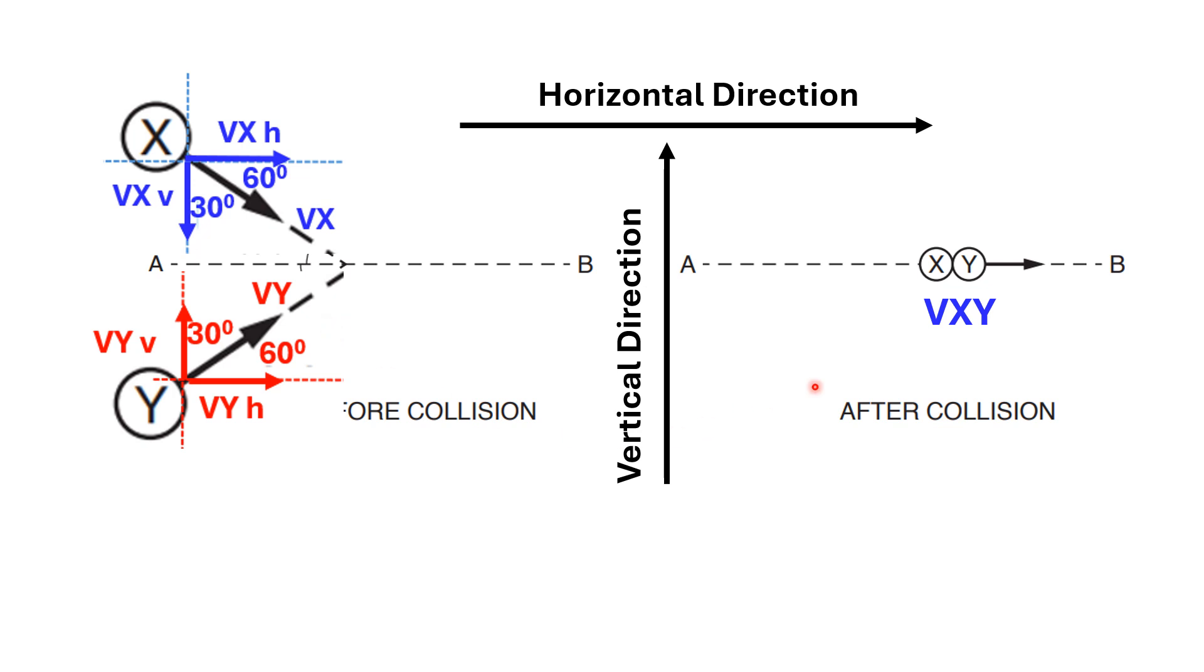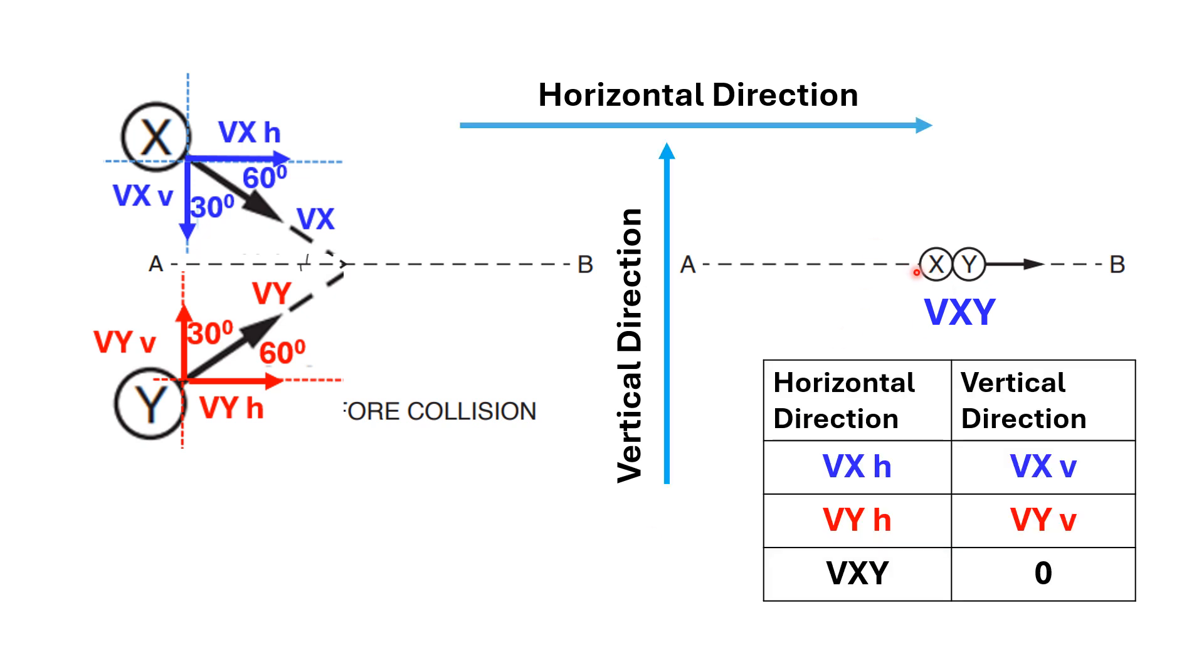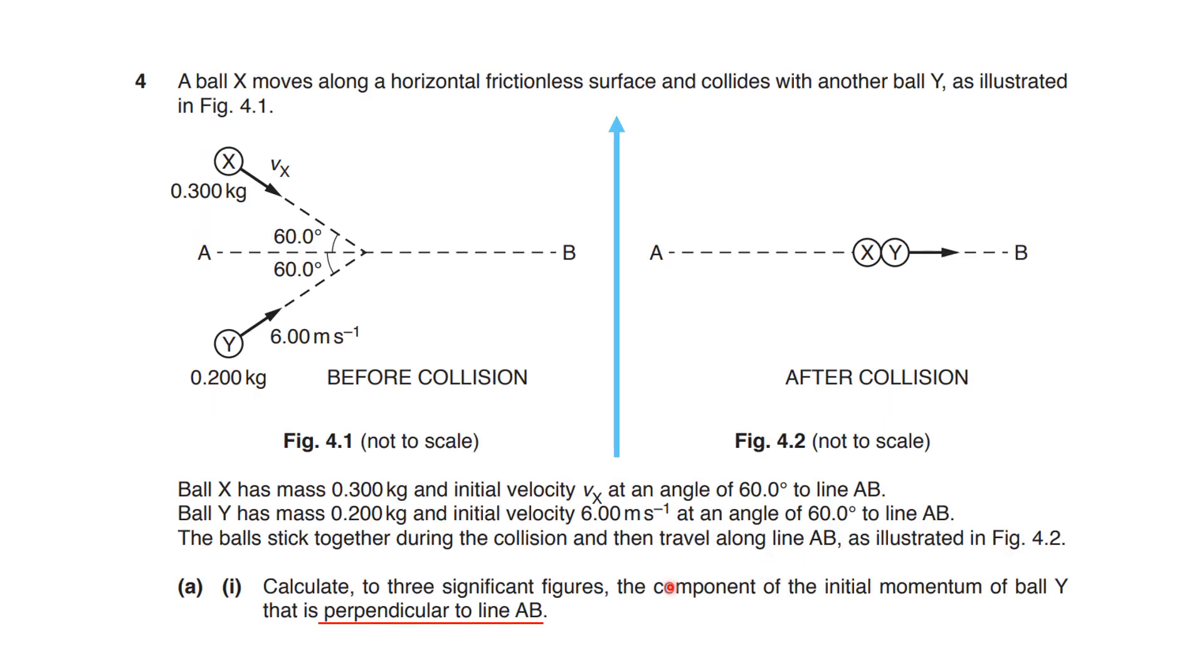Now, let's look at the whole picture and identify all horizontal and vertical components with the intention to group them. This table shows all horizontal and vertical orientations with each velocity involved in this question. Going back to the question, here at the bottom, asks what is the initial momentum of the ball Y in the vertical orientation, which means perpendicular to the line AB.